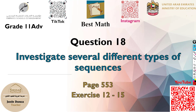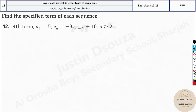Question 18 is to find terms for different types of sequences. Here you have to find the specified term — specifically the fourth term. The first term a1 is given as phi. There is a formula mentioned: a_n equals negative 3 times a_(n-1) plus 10, where n must be greater than or equal to 2.